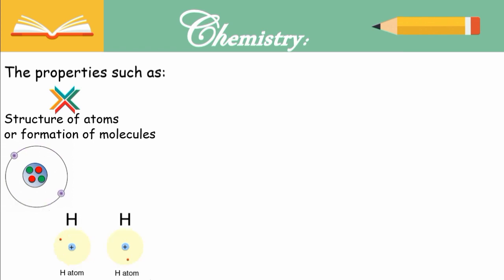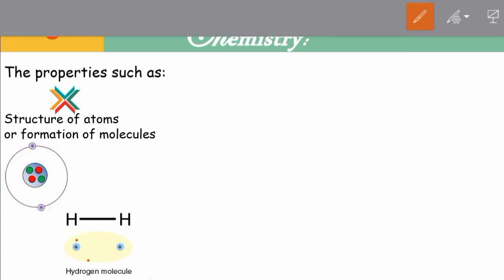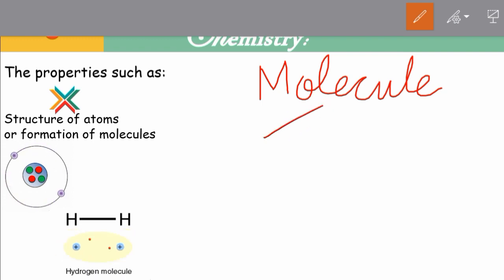So students, molecules are of two types: homoatomic and heteroatomic molecules. Homo means same, atomic means of atom. So molecules which are made up of same atoms or same type of atoms are called homoatomic molecules.